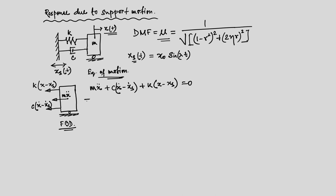The equation of motion is M·ẍ + c(ẋ - ẋ_s) + k(x - x_s) = 0. We can modify this expression: M·ẍ + c·ẋ + k·x = c·ẋ_s + k·x_s. This new quantity on the right-hand side is actually the applied force causing the vibration in the structure. Since we know x_s, we can easily find x_s_dot(t) = x₀λ cos(λt).